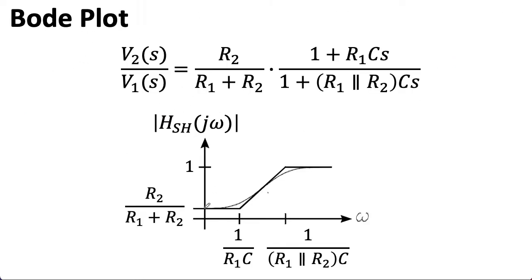So our Bode plot is going to have this high shelf characteristic going from the raw voltage divider at DC going up to 1, letting all of the signal through. And the lower breakpoint is going to be 1 over the time constant associated with the zero. And the upper breakpoint is 1 over the time constant associated with the pole. And the number over here is associated with this breakpoint. I had to squish it over a little bit because otherwise the text wound up overlapping.